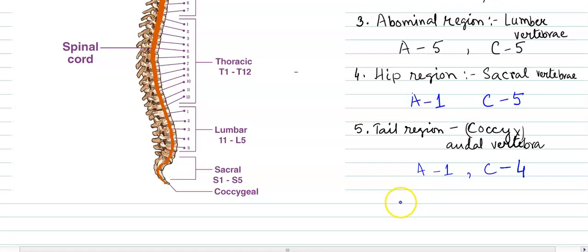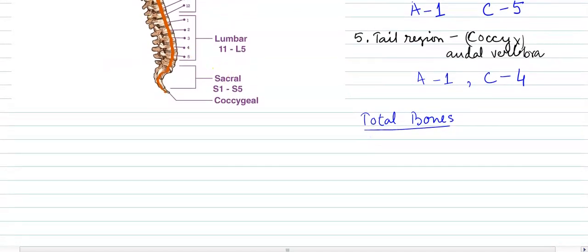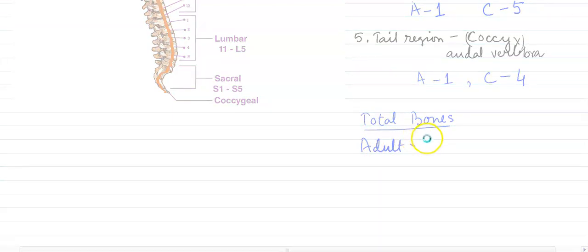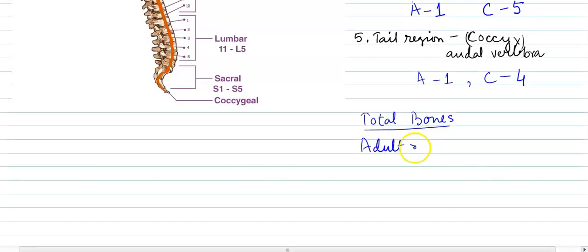If we talk about adult, adult's total bones, let us look at the adult condition. In adult's condition, the total number of bones is 26. Adult's condition is 26.